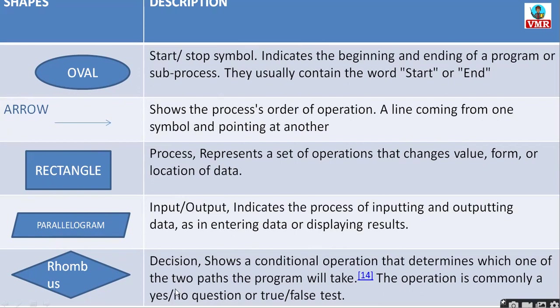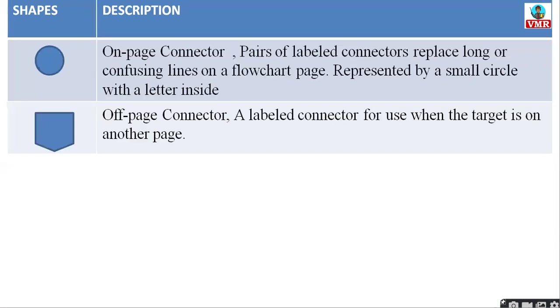The rhombus is the decision box or decision symbol. When you write a condition in it, you define what happens if the condition is true and what happens if it is false. The circle is an on-page connector — pairs of labeled connectors replace long and confusing lines on a flowchart page, represented by a small circle with a letter inside.